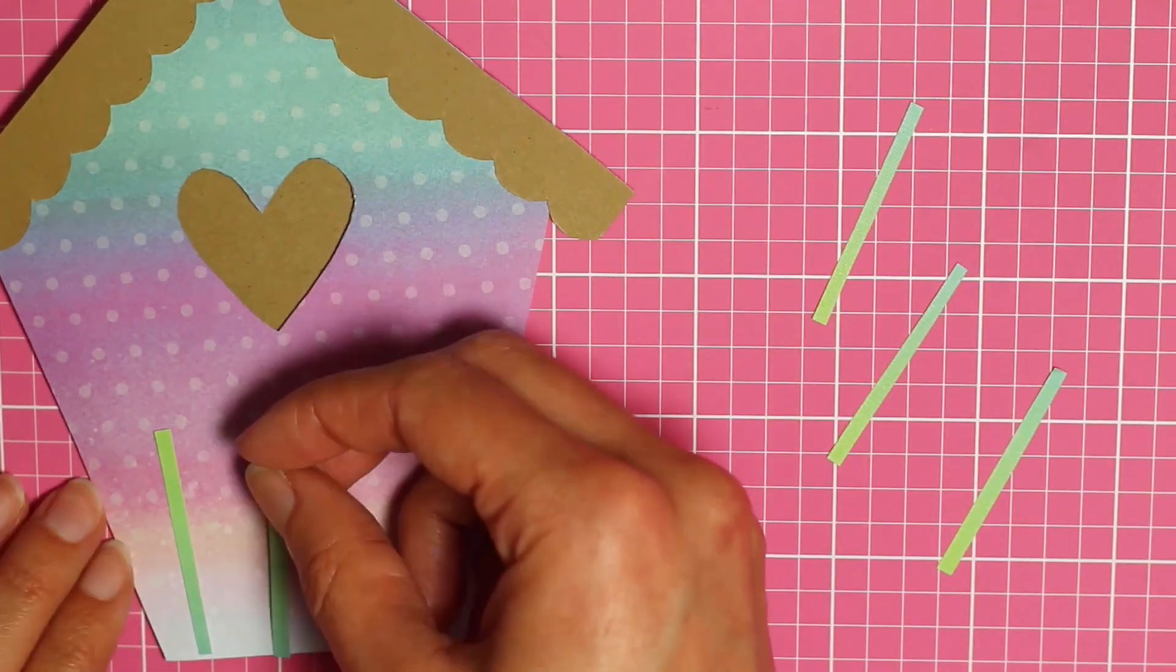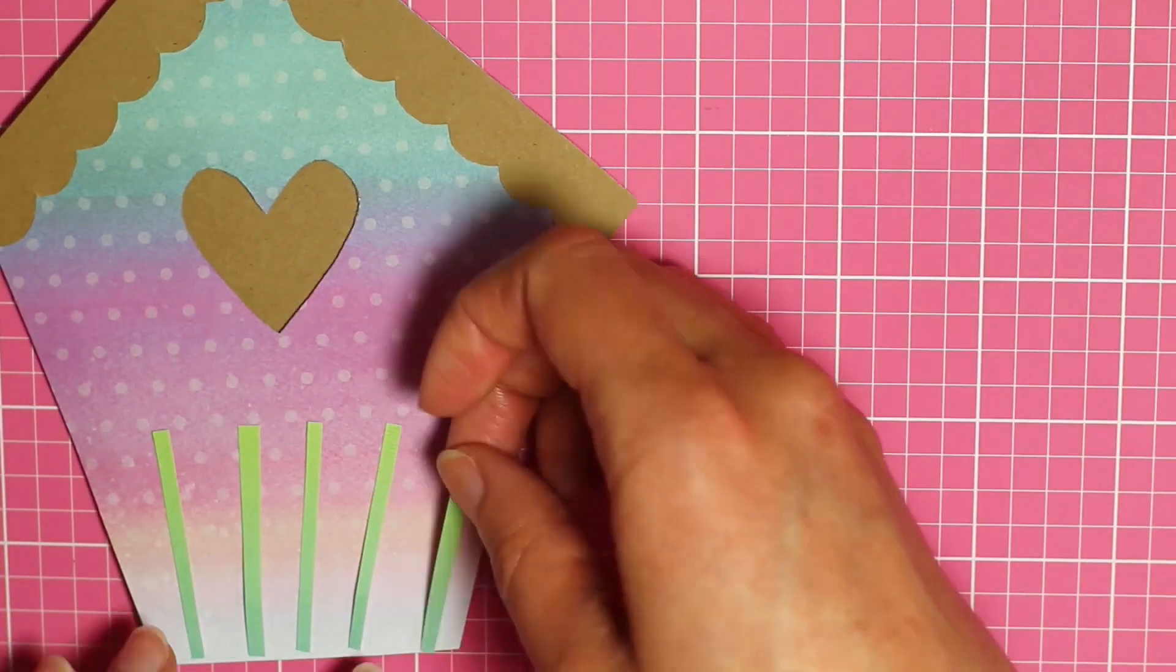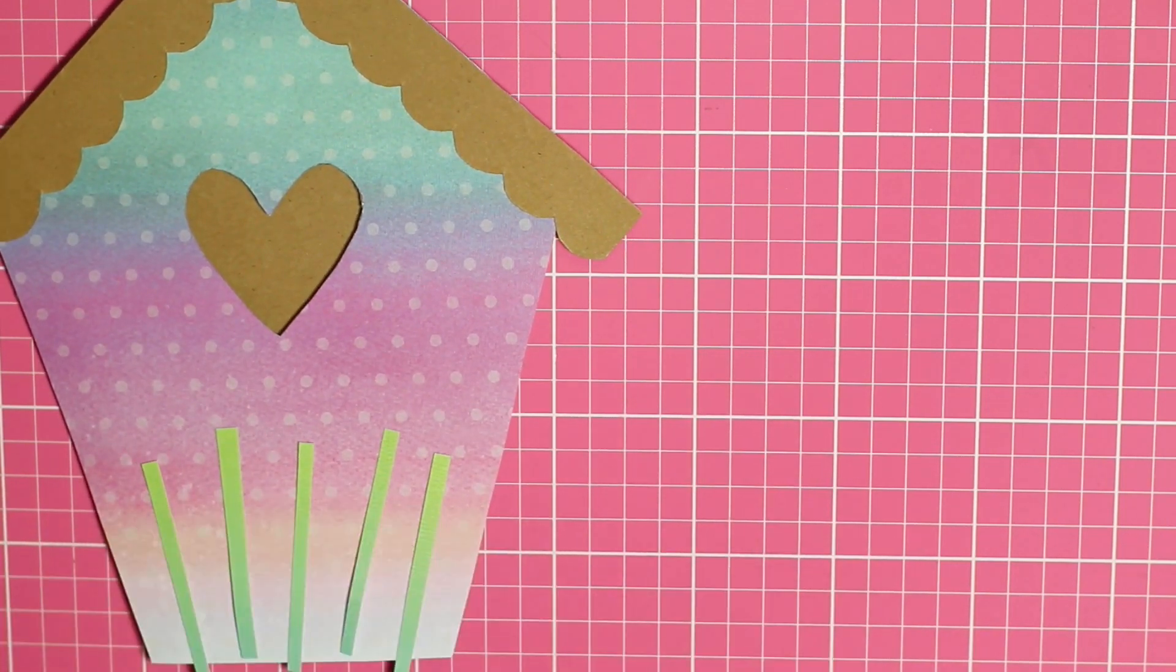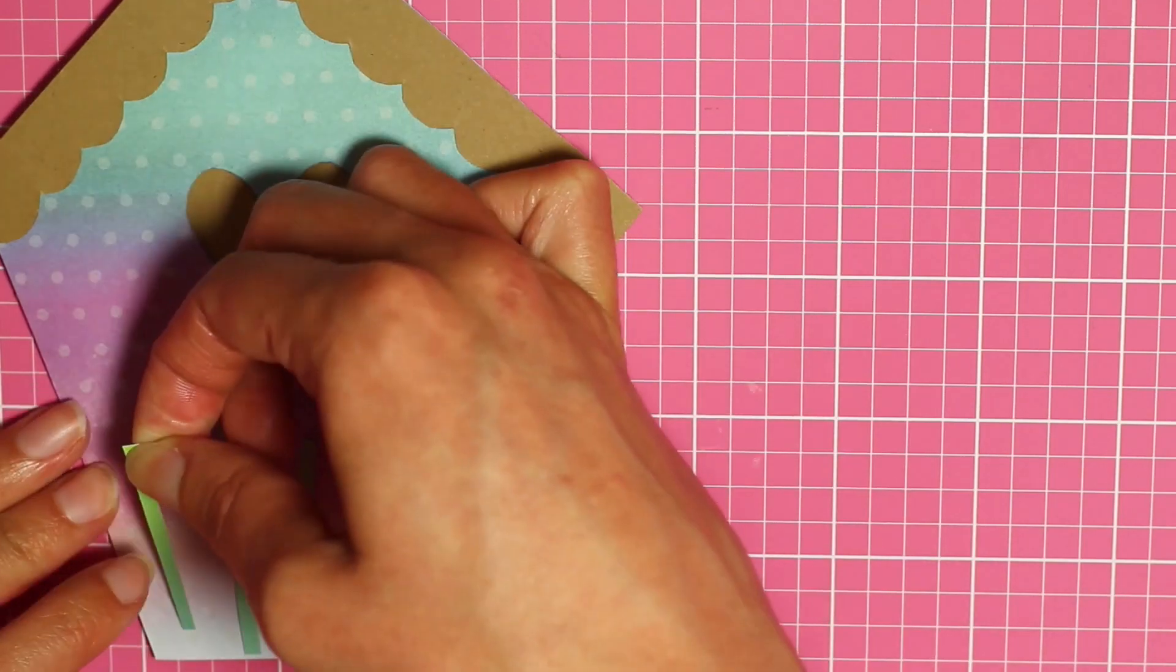So I cut five of those. And then I just used the fence to decide where to position them. And line them up. And then I used a glue stick to attach them.